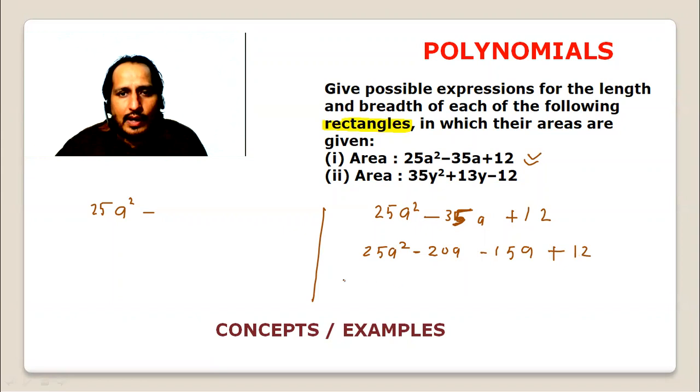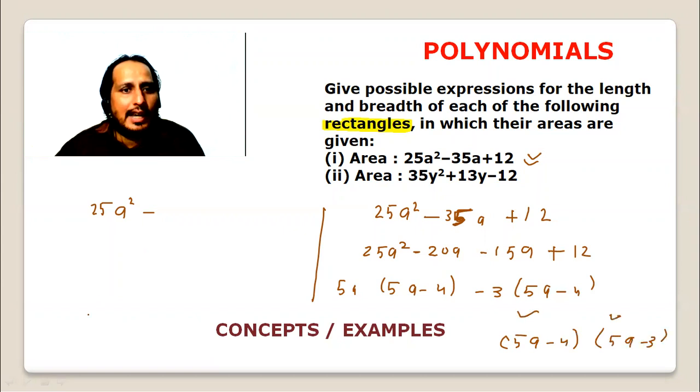Let's take 5a common, so this is 5a minus 4. Here, 3 is common, so 5a minus 4 appears again. So the factorization is 5a minus 4 into 5a minus 3. This is the factored form.